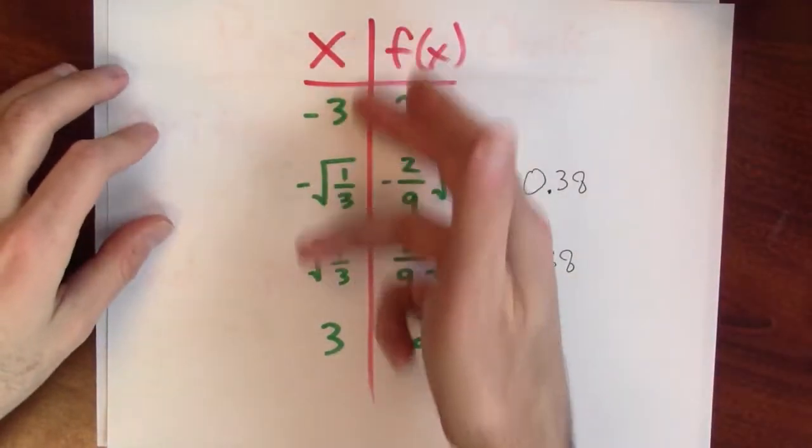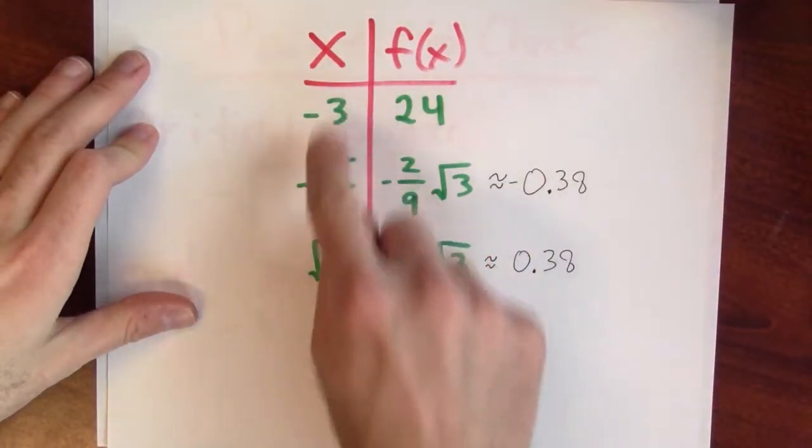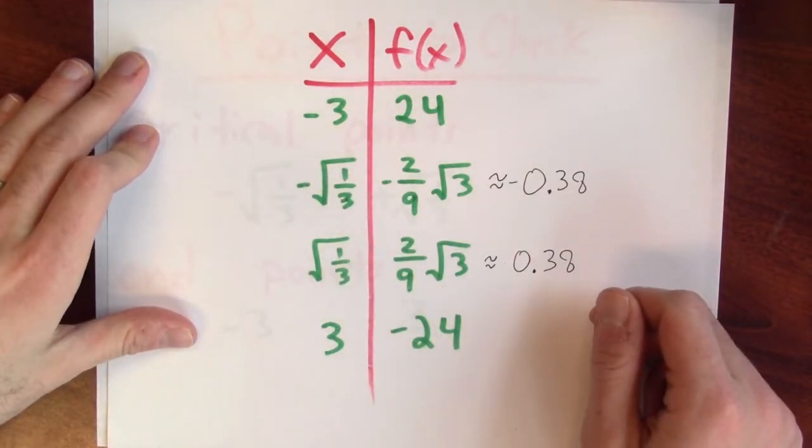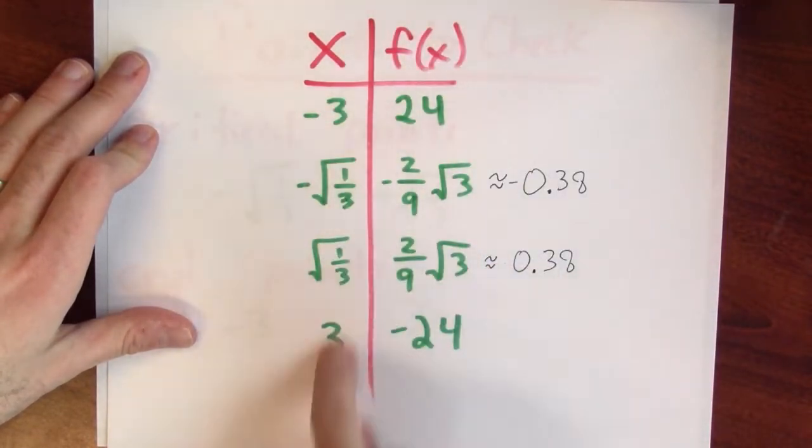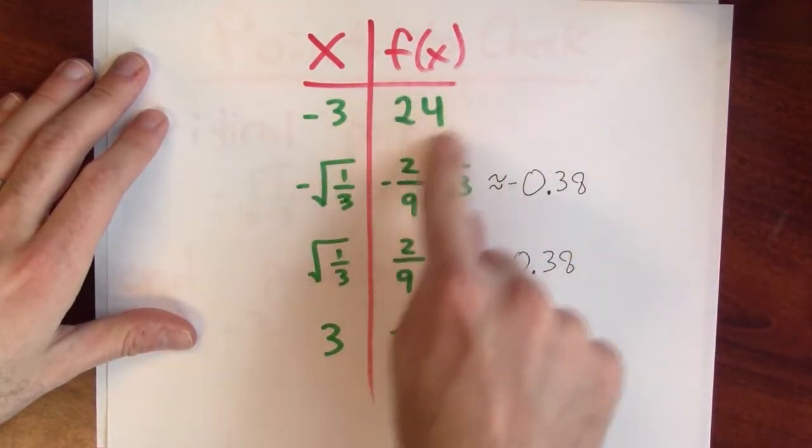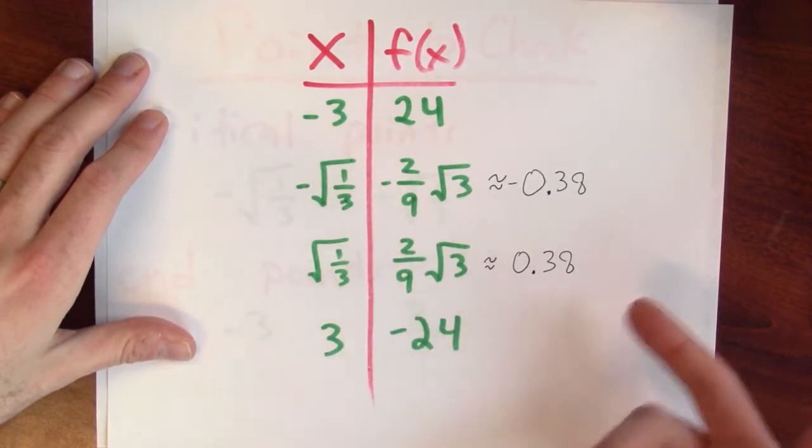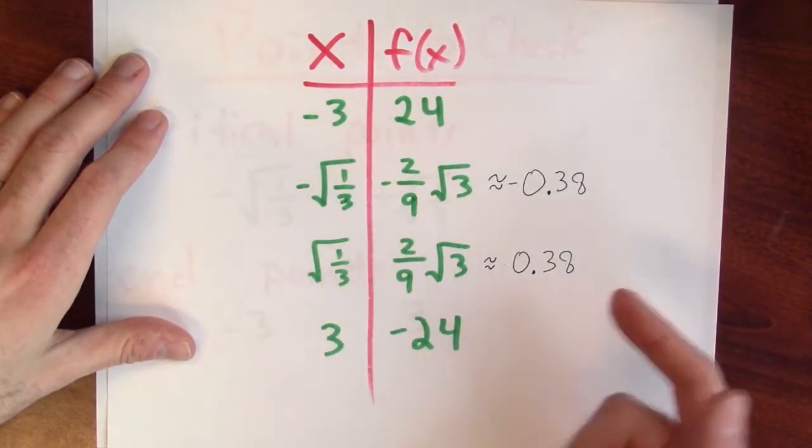So where does this continuous function achieve its maximum value and where does this continuous function achieve its minimum value on the given domain? So let's go ahead and just evaluate the function at those four points. Here are the endpoints minus 3 and 3 and the critical points plus or minus the square root of a third. And when I evaluate the function at these points, what do I find? Well, I find that the largest output occurs when x is negative 3 and the smallest, the most negative output occurs when x is equal to 3.